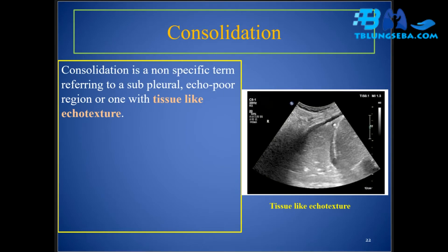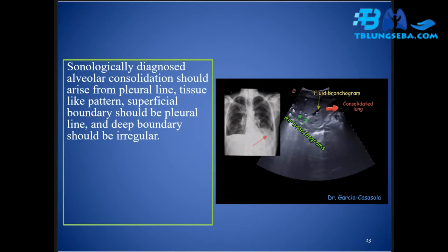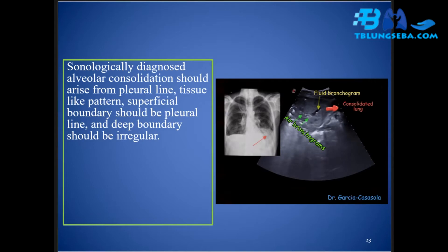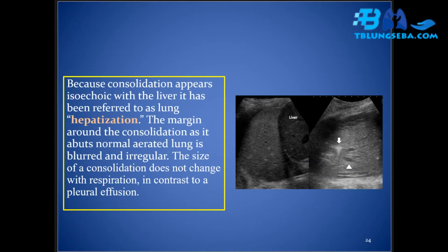Consolidation is a non-specific term referring to a subpleural echo-poor region or one with tissue-like echo texture. It can be present in a range of diseases including pneumonia, pulmonary tuberculosis, pulmonary embolism, lung tumors, pulmonary hemorrhage, pulmonary edema, atelectasis, and pulmonary contusion. Sonologically diagnosed alveolar consolidation should arise from the pleural line, with a tissue-like pattern; the superficial boundary should be the pleural line and the deep boundary should be irregular. Consolidations of inflammatory nature have an irregular profile with a hypoechoic heterogeneous structure and a branching bronchogram. Because consolidation appears isoechoic with the liver, it is referred to as lung hepatization.